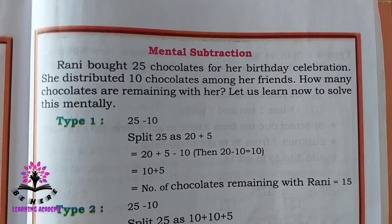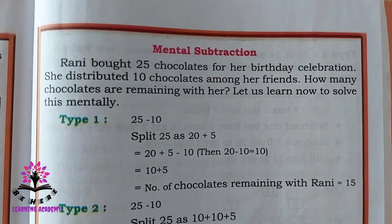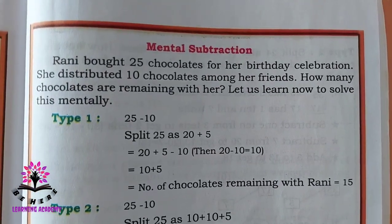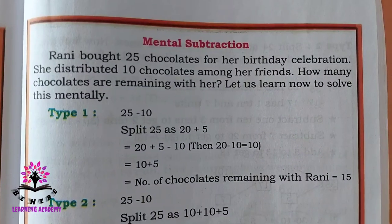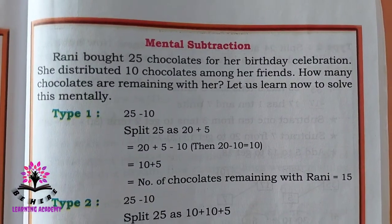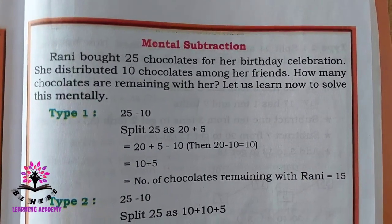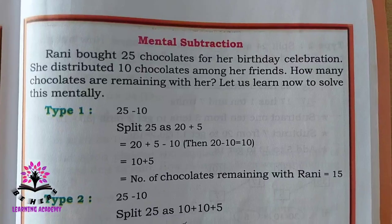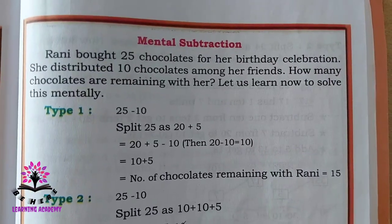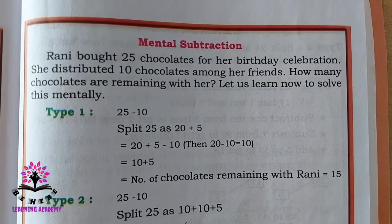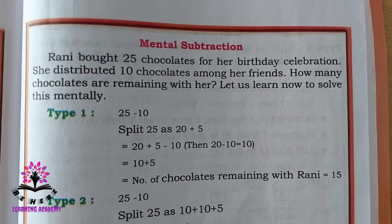Hello students, let us continue with our chapter on Mental Subtraction. Rani brought 25 chocolates for her birthday celebration. She distributed 10 chocolates among her friends. How many chocolates are remaining with her? Let us solve this problem.